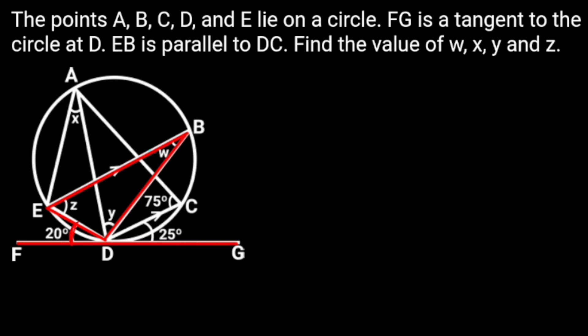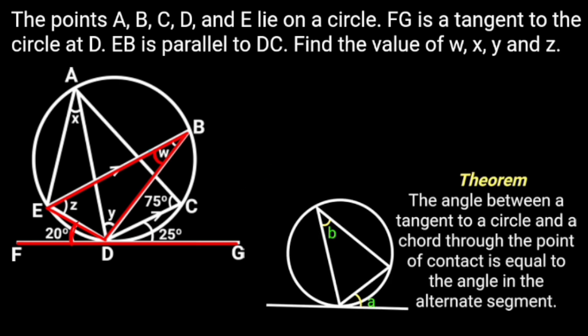Notice that W is an angle in the alternate segment. Let's recall the circle theorem of the angle between the chord and the tangent. It states that the angle between a tangent to a circle and a chord through the point of contact is equal to the angle in the alternate segment. From this figure, A is the angle between the tangent and the chord, and B is the angle in the alternate segment. From the theorem, A is equal to B. This shows that W is equal to 20 degrees, and the reason is angle in the alternate segment.